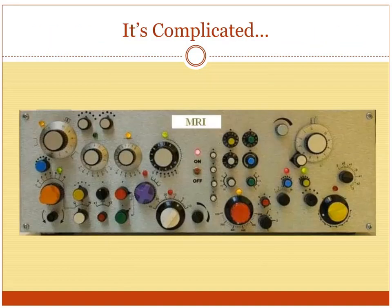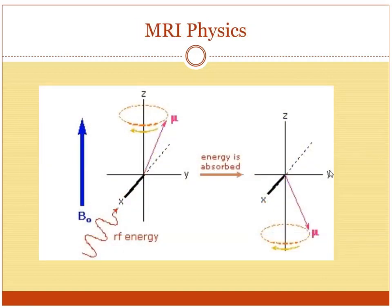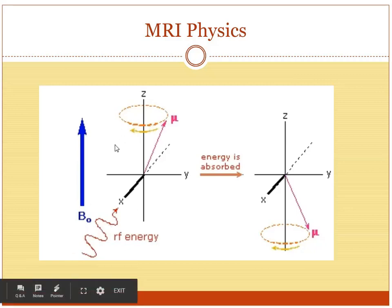Now, MRI is complicated. CT, remember, is basically just an x-ray beam — it has one switch. MRI has a lot of switches. It's very, very complicated. It's probably enough to know that MRI uses a magnetic field — a really strong magnetic field that you lay in. It also uses radio waves, which are not harmful. Remember, CT has ionizing radiation that is harmful, whereas MRI is perfectly safe. It has just a magnetic field, which is not harmful, and radio waves, and it's able to create these spectacular images just from that.